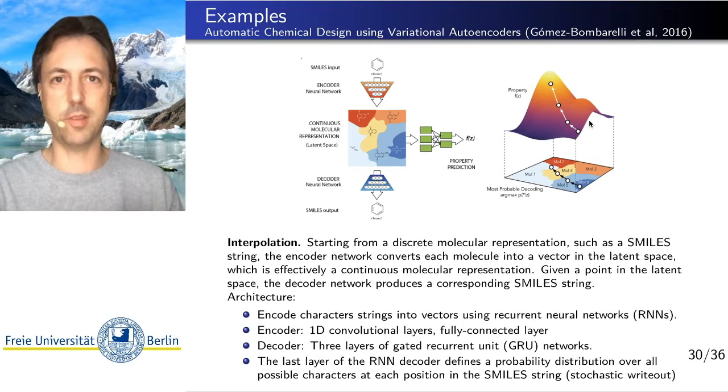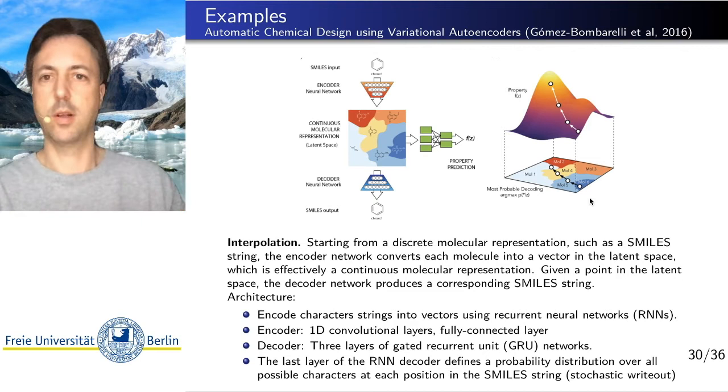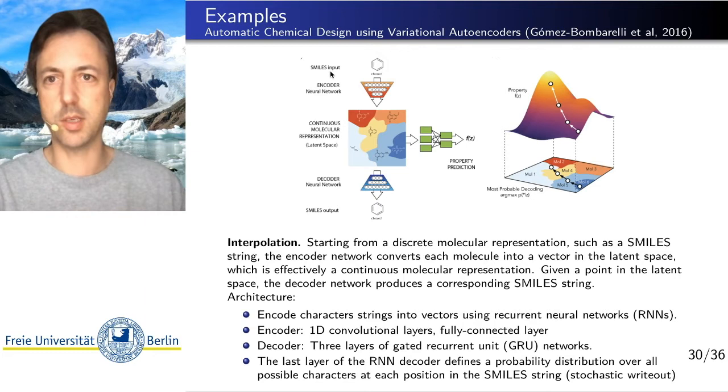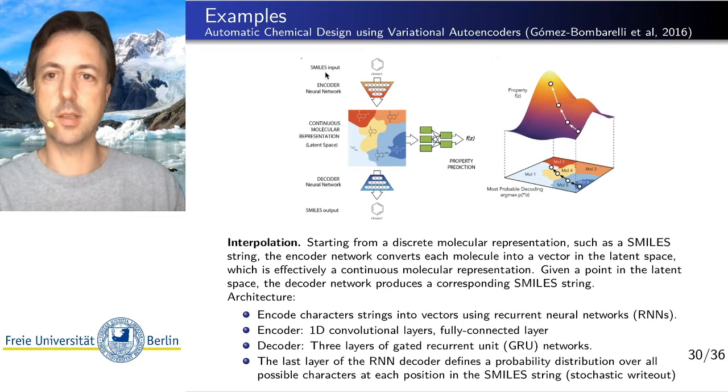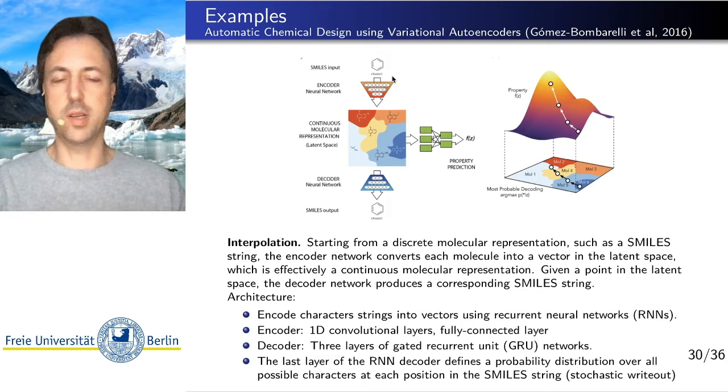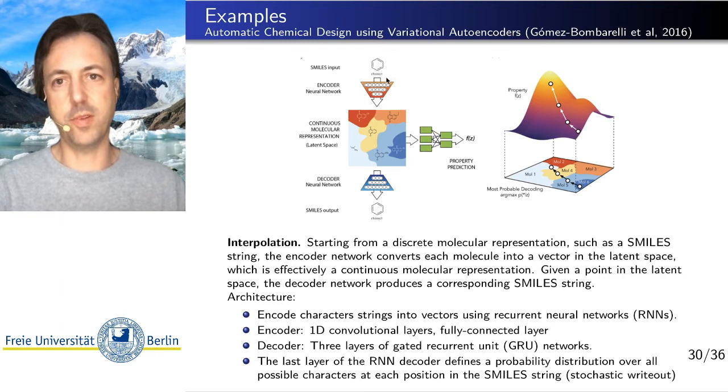So these are basically graphs where on each node of the graph we have a certain type depending on what element we have there like carbon, nitrogen, hydrogen, etc. And we encode these chemical graphs or networks by so-called SMILES strings. This is a convention that is used in chemistry in order to write the chemical graph into a string.